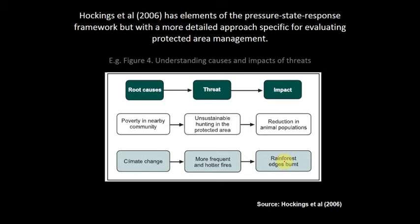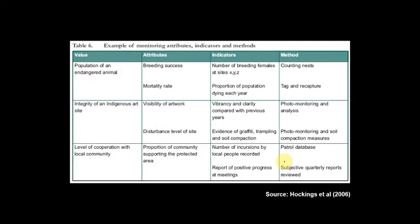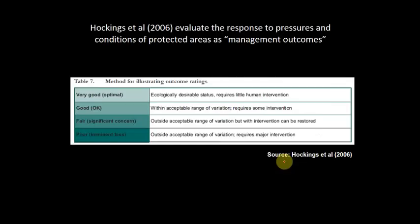The Hockings framework also includes big tables of threats and barriers to effective management of protected areas, examples of monitoring attributes and indicators - such as population of endangered animals, indicators, and methods. They also have a framework for evaluating the response to pressures and conditions in terms of management outcomes: good, fair, or poor. This gives you an off-the-shelf framework for evaluation. If you're doing a protected area, I'd highly recommend Hockings.